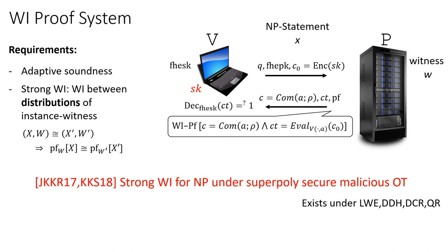To instantiate this component, we use the works of Jain, Kalai, Khurana, and Rothblum, or Kalai, Khurana, and Sahai, who construct strong witness indistinguishability for NP under super-polynomially secure maliciously secure oblivious transfer. This exists under learning with errors, DDH, decisional composite residuosity, and quadratic residuosity — all the assumptions we rely on. This concludes our witness indistinguishability transformation.